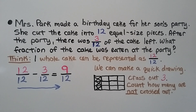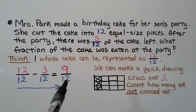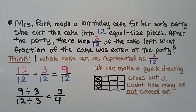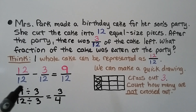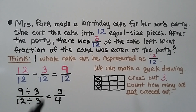Because the denominators were the same, we can think of it as just sliding that denominator over into the difference. We can write 9 twelfths in simplest form by dividing the numerator and denominator by the same number, 3, which is a factor of both 9 and 12. 9 divided by 3 is 3, and 12 divided by 3 is 4. So 9 twelfths equals 3 fourths in simplest form.